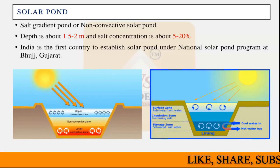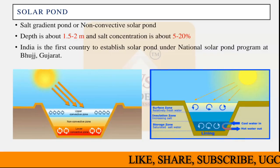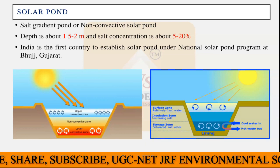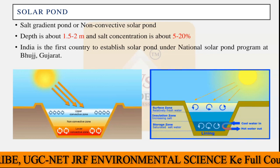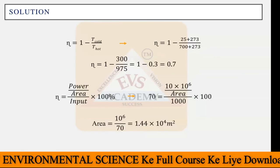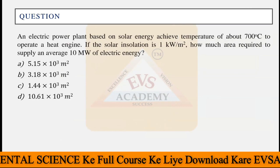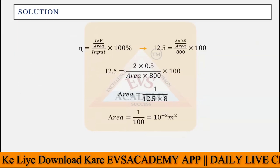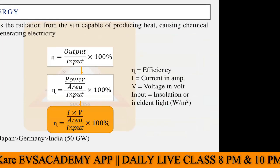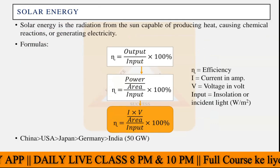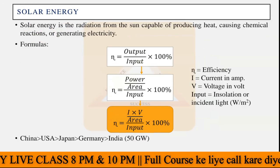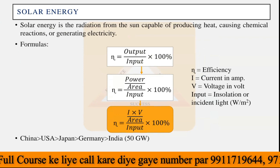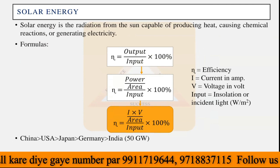Welcome again to the classes of the VES Academy. We were doing the energy and environment chapter, which is unit 5 in your syllabus. We covered almost half the unit in the last class on solar energy and numerical questions from solar energy. The main formula to remember when solving solar energy questions is: efficiency equals power divided by area divided by input, multiplied by 100%, or current I multiplied by voltage V, divided by area divided by input, multiplied by 100%.